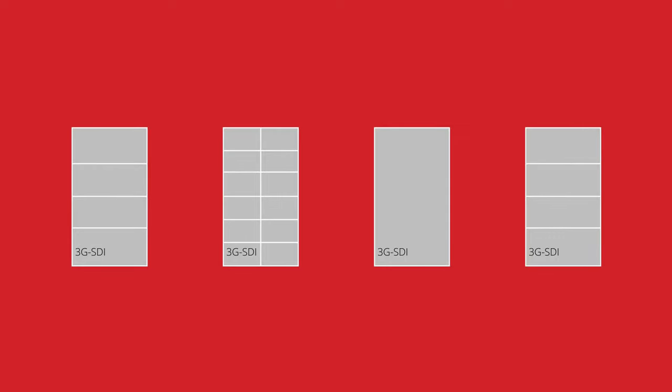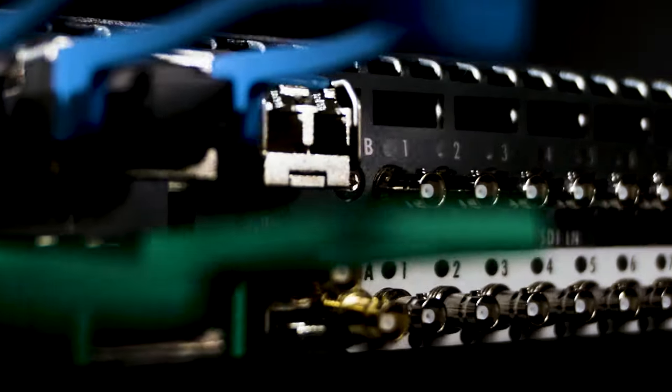The multi-view app is powerful, providing 8 3G multi-view mosaics in landscape or 4 3G multi-view mosaics in portrait. Up to a total of 36 3G, HD, or ST pip sources can be displayed across the mosaics.